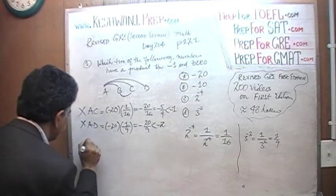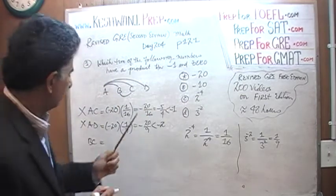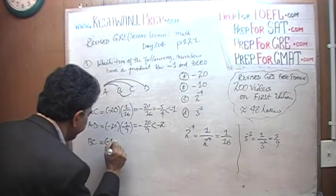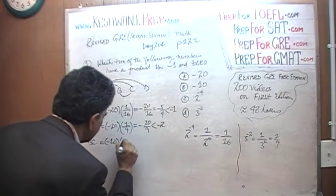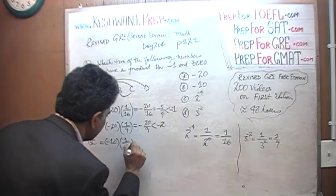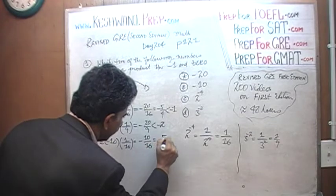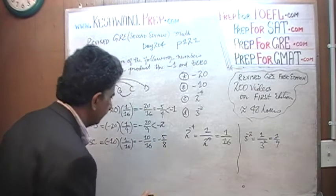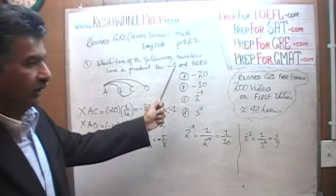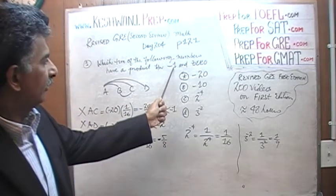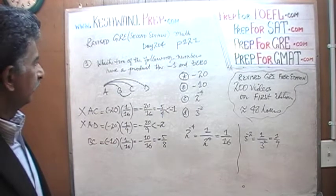Let's try B times C. B is negative 10 and C is 1 over 16, which gives us negative 10 over 16, which simplifies to negative 5 over 8. Negative 5 over 8 does the job — it falls between negative 1 and 0.